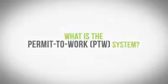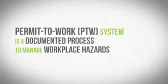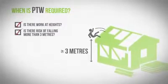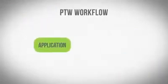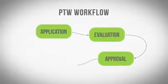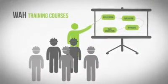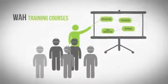A Permit-to-Work system is a formal documented process used to manage workplace hazards. It is required when a worker can fall a distance of more than 3 meters, measured from the feet level to the ground or surface below. The Permit-to-Work system workflow starts from application, to evaluation, to approval, to task completion. This system requires various levels of checks, and the duty holder implementing the Permit-to-Work system will have to ensure that all key personnel have sufficient experience and training to carry out their duties.